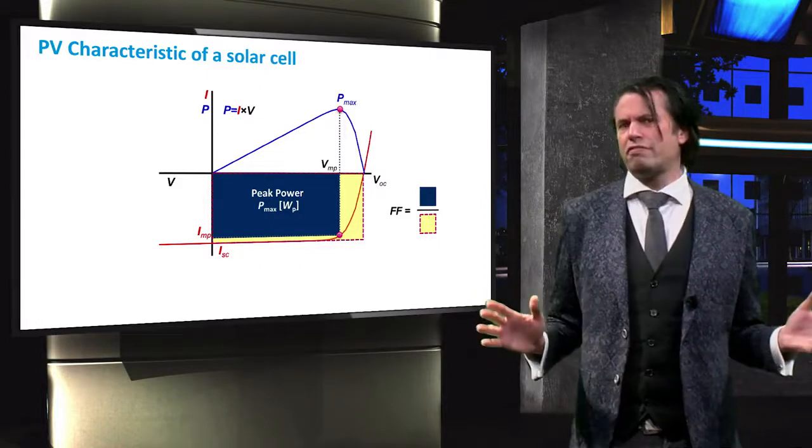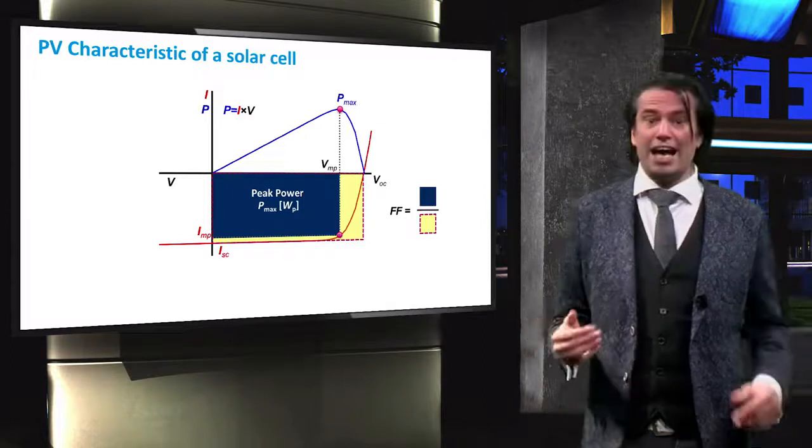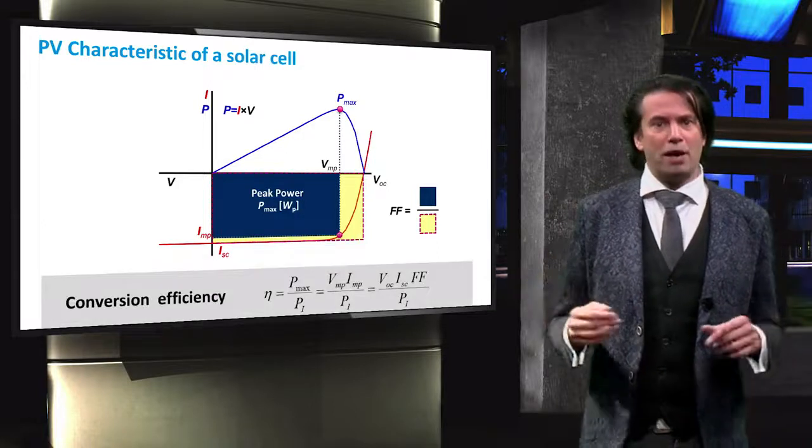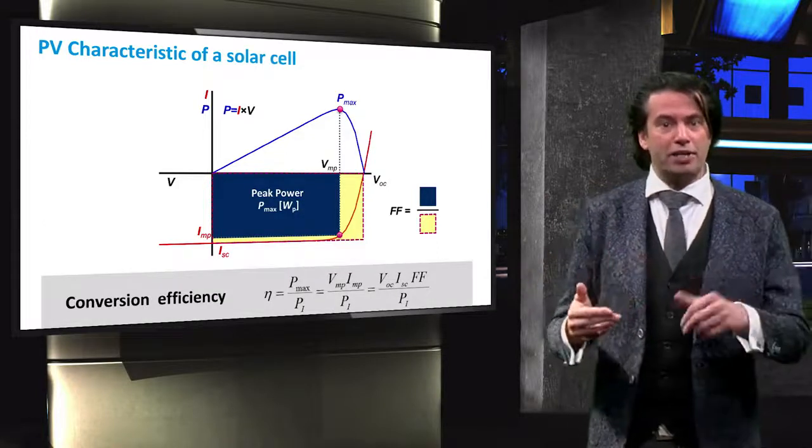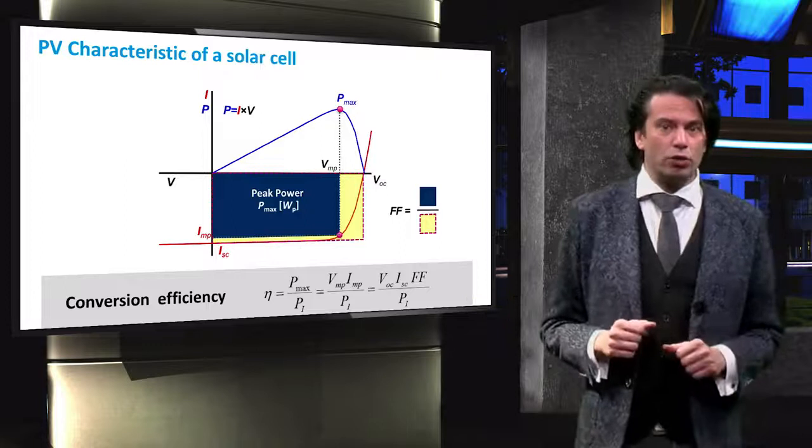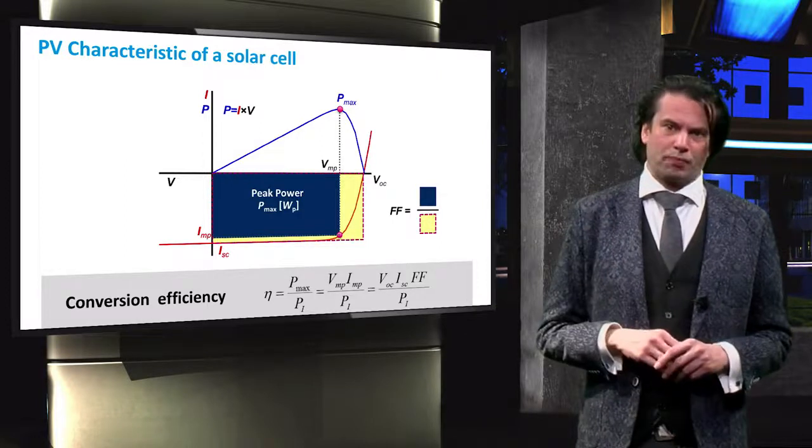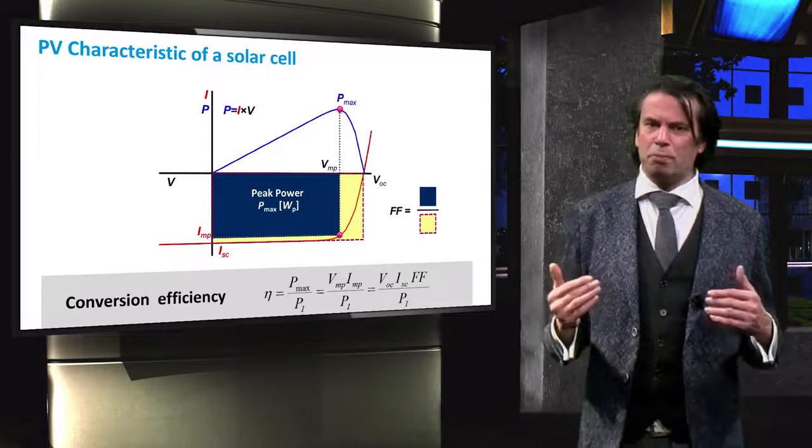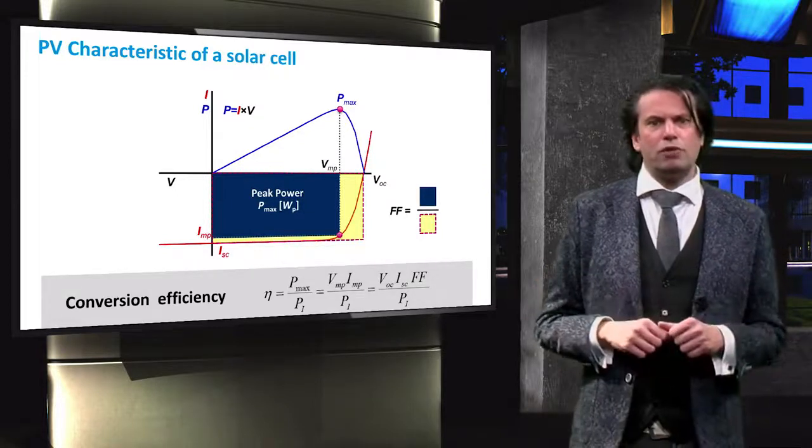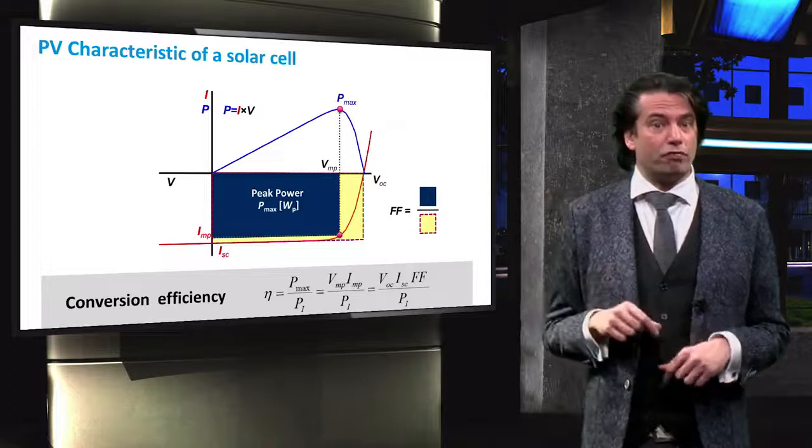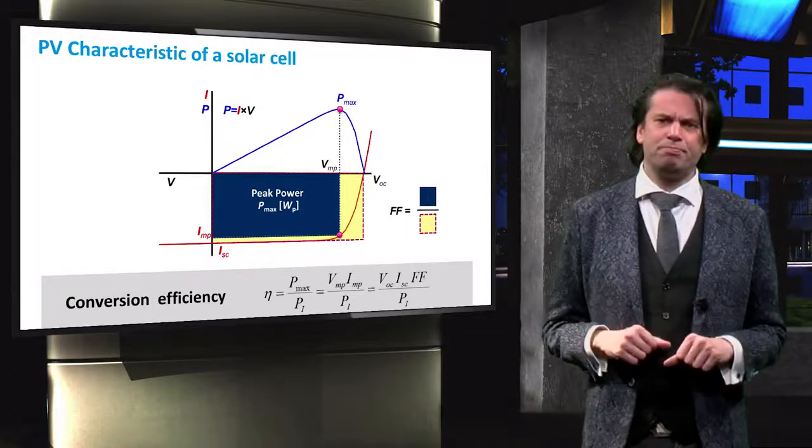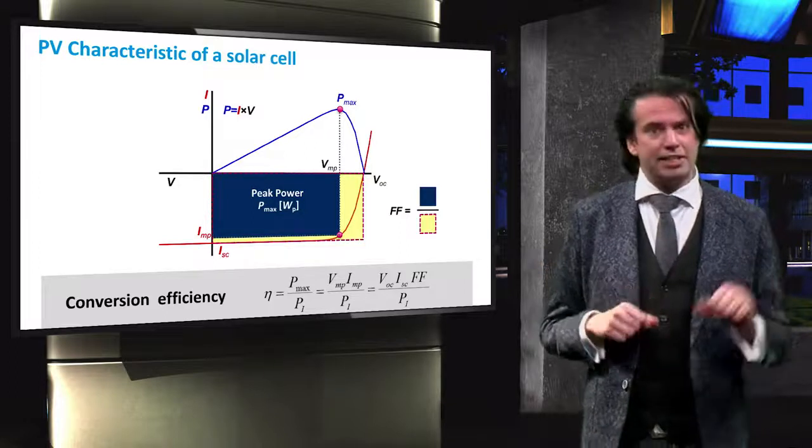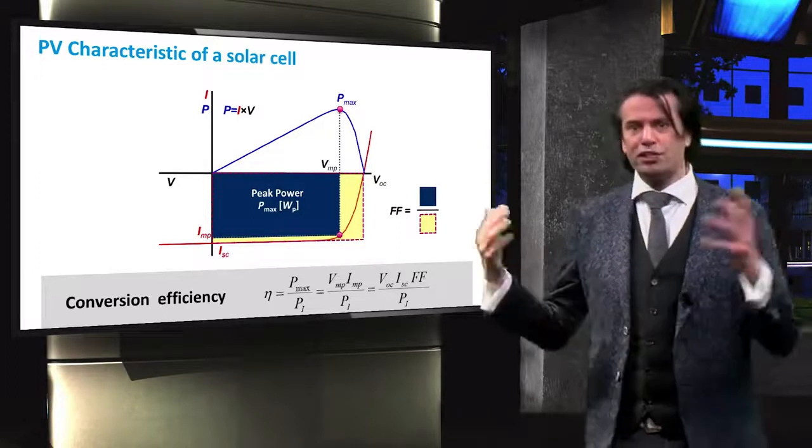With these terms we can define our conversion efficiency, eta. The efficiency of any such system is first defined by the power output divided by the input power, which we will call Pi. With these equations you can see that we can call the maximum power output simply Pmax. We could also define it as the product of VMP and IMP. Finally, we can also use the VOC and ISC and the fill factor. All of these terms are equal.